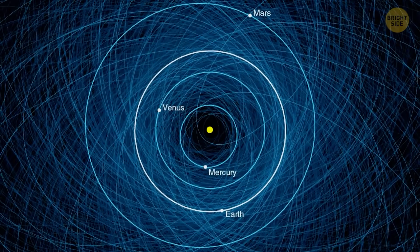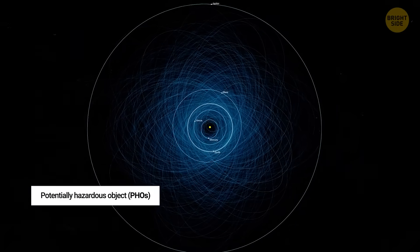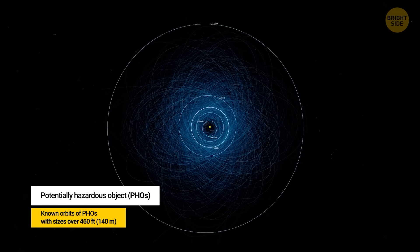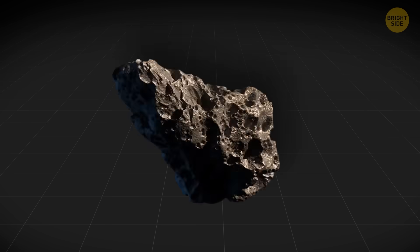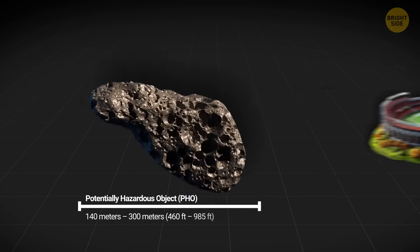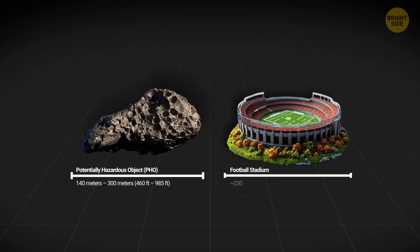On paper, many of them sit in the potentially hazardous object category, or PHOs, but the nickname City Destroyer explains them better. These rocks aren't huge enough to wipe out the planet, but they could flatten a city and mess with the climate for a few seasons.